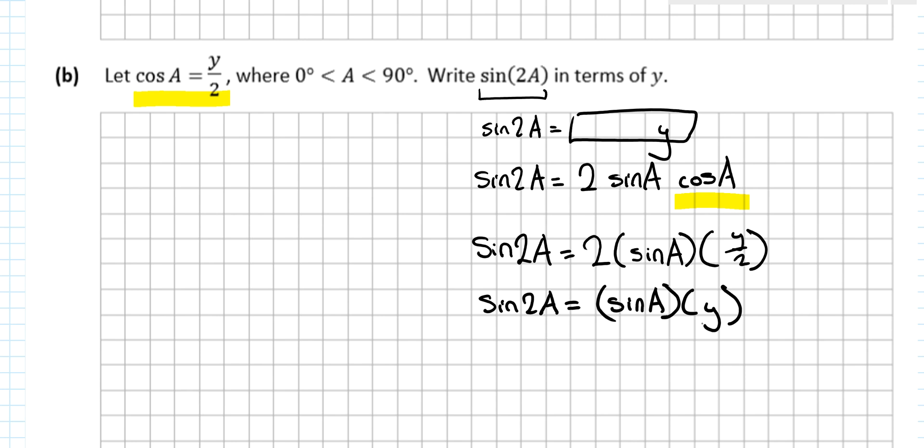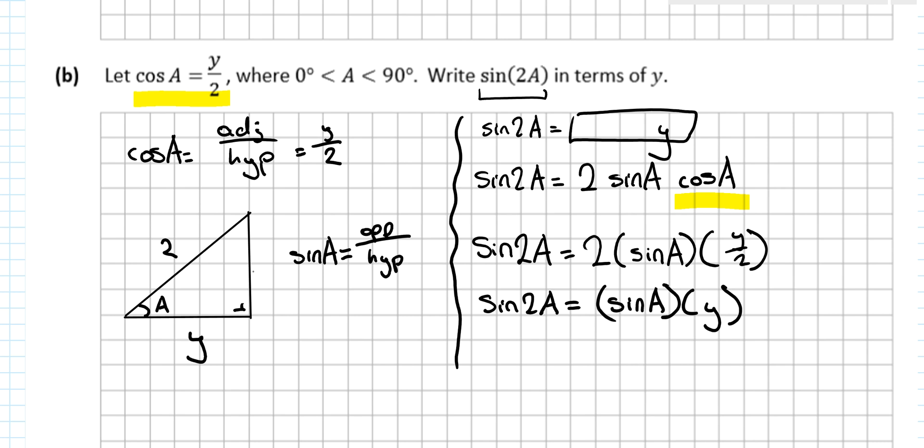So now the issue is this sin A. How can I get that on its own? Well, I know that cos A over here. Cos is always defined as adjacent over hypotenuse. So if I were to draw out a right angle triangle and call this A, as y over root 2, this is going to be y, this is going to be root 2. And I want to find sin A. Well, sin is defined as opposite over hypotenuse. So I need to be able to find this opposite side here. I'm going to call it O.